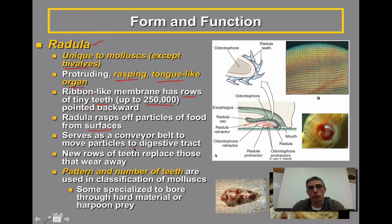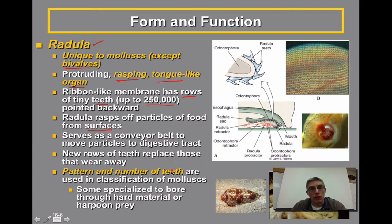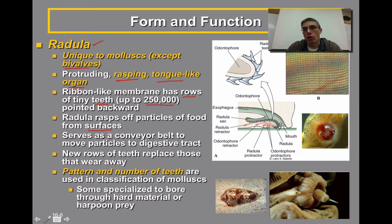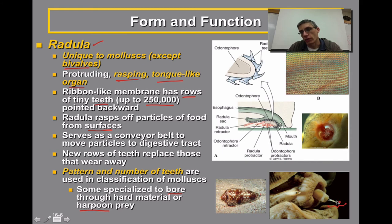The radula serves like a conveyor belt to move particles to the digestive tract of the animal. As the radula is pushed out and scraped along the surface, it moves food to the back of the area and eventually to the digestive tract. Any teeth that are worn away are replaced quickly, so they can actually replace their teeth. The pattern and number of teeth are often used to classify the type of mollusk. Not all mollusks have the same type of radula — many have been specialized based on their environment. Some are specialized to bore or burrow into material, and one particular type of cone-shell mollusk actually uses the radula like a harpoon to paralyze its prey, as you can see right here.